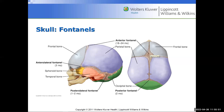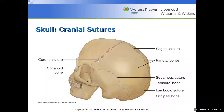The fontanelle is also known as the 'mole' of the head. Traditionally, rubbing it with coconut oil is said to help close it faster. The cranial sutures include the sagittal suture and the lambdoid suture — called 'lambdoid' because it looks like the Greek letter lambda, an upside-down Y. The temporal bone is right over the temple and the occipital bone is to the back, inferior to the other bones.